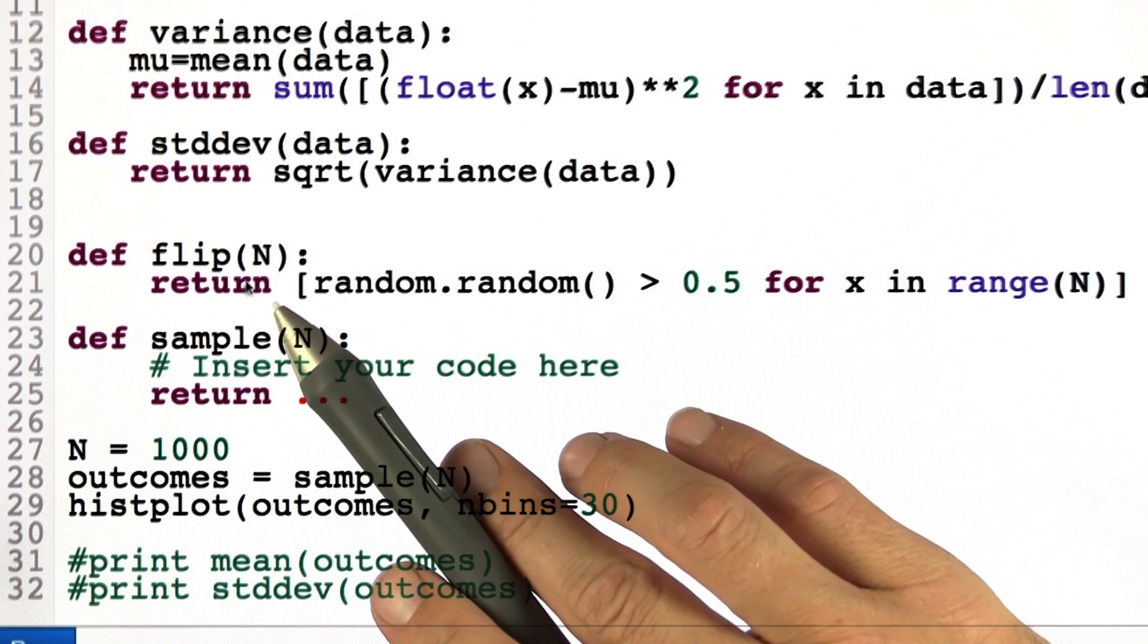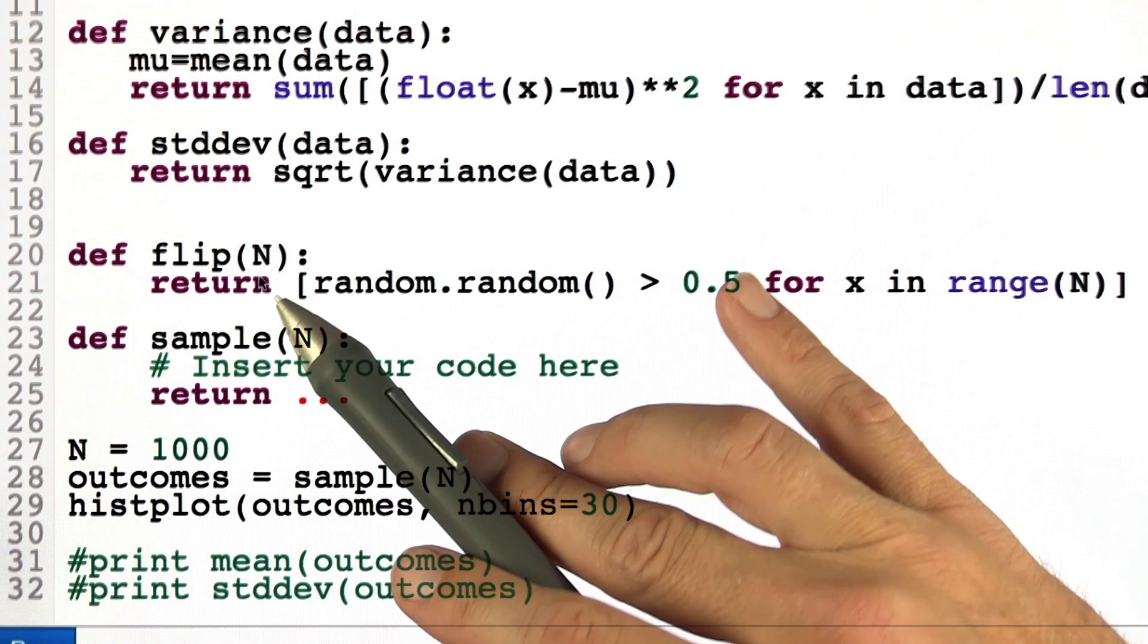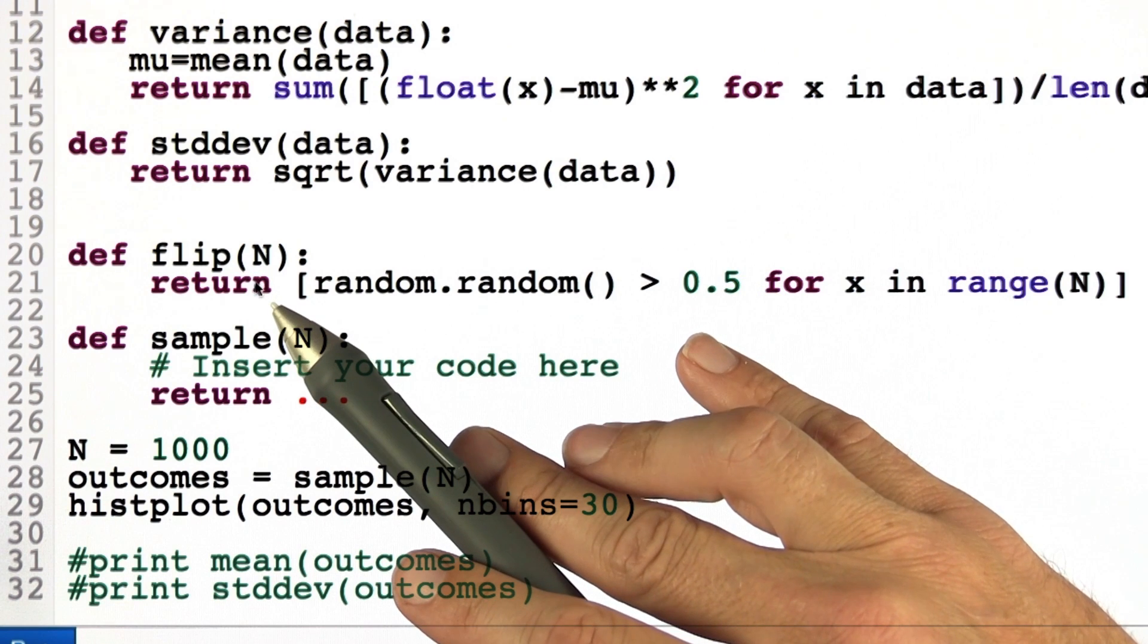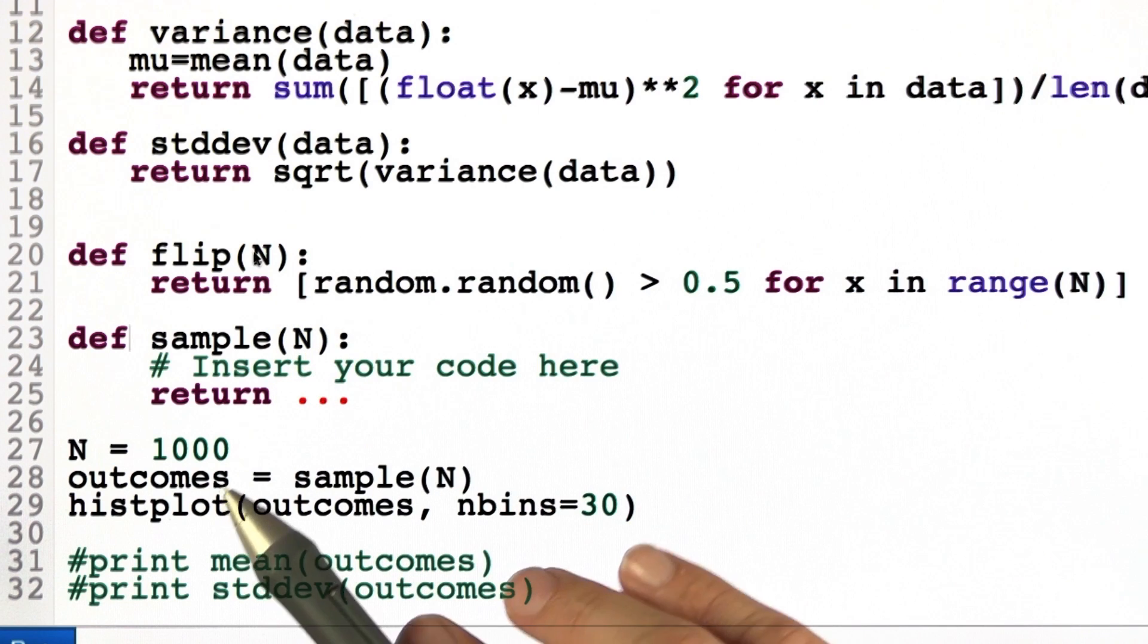I run the flip experiment 1,000 times. And every single time I compute the mean. And now I assemble a list of all the means into this thing called outcomes.